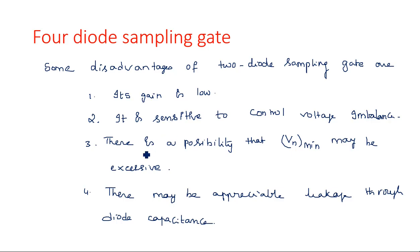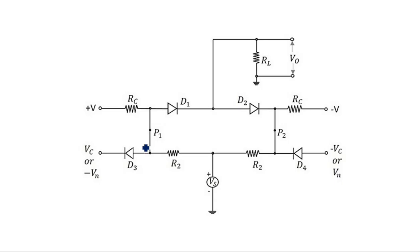Keeping all these drawbacks in mind, we are going to design a four diode sampling gate where the circuit is implemented with four diodes and two control voltages on either side, like the previous circuit, but here the problems mentioned are going to be eliminated. The four diode sampling gate improves the features stated in the previous design.